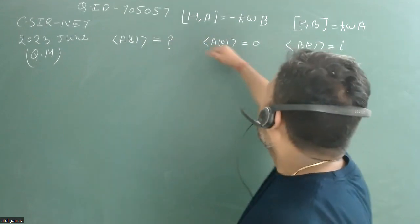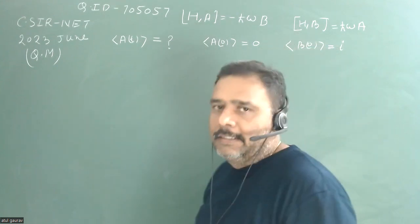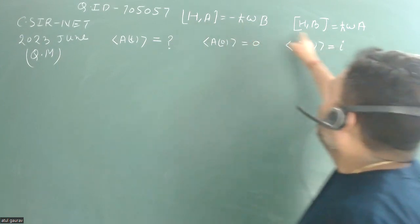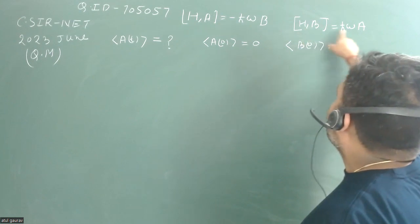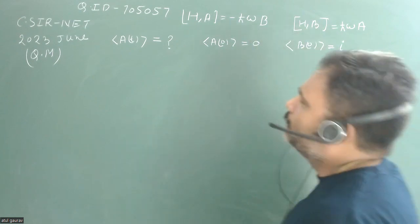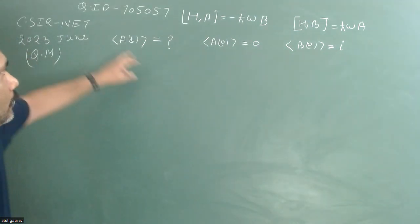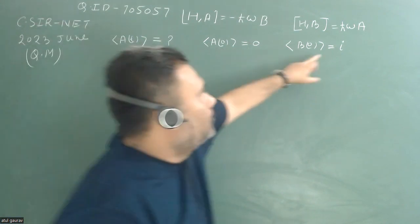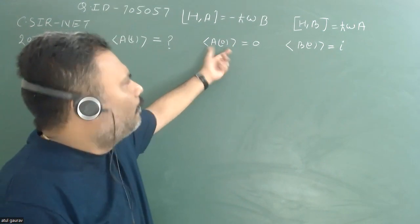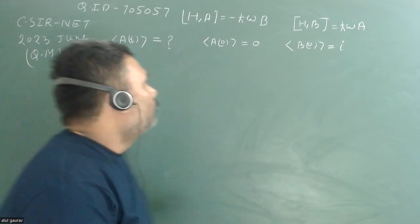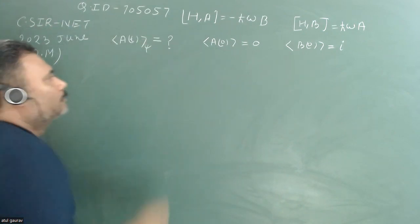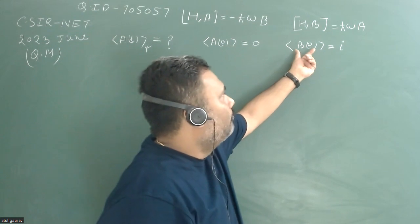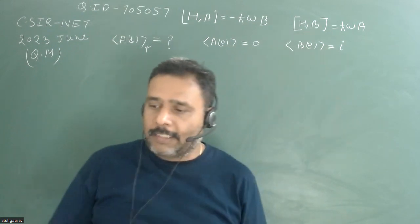We have operator A, operator B, and Hamiltonian H. The commutation between H and A is minus ℏω times operator B, and the commutation between H and B is ℏω times A. We have to see how operator A evolves with time. The initial conditions are: at T=0, the expectation value of A on any state ψ is zero, and the expectation value of B at T=0 is i.